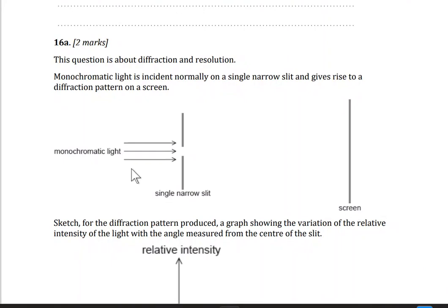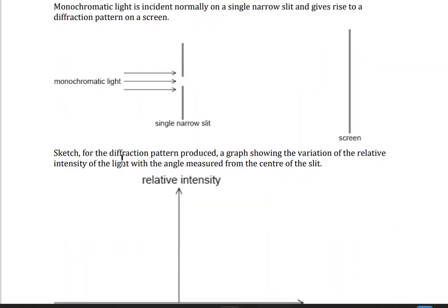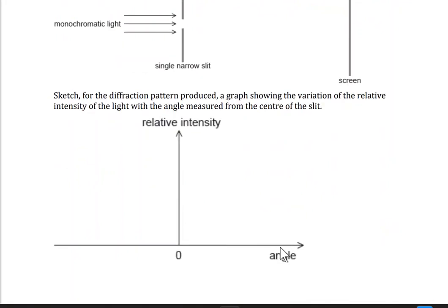So here we have monochromatic light incident on one slit, and we will have a diffraction pattern here. A sketch for the diffraction pattern produced, the graph showing the variation of the relative intensity versus angle.